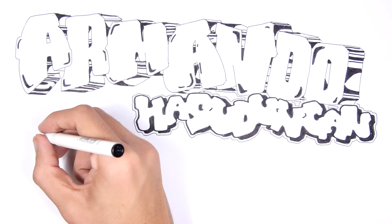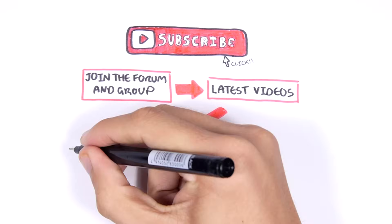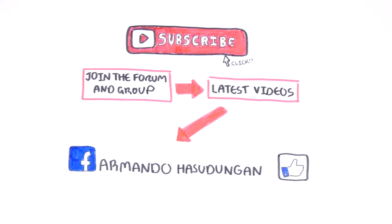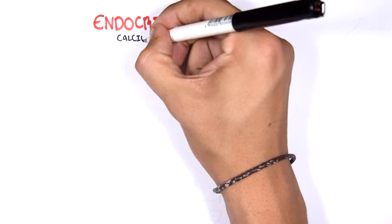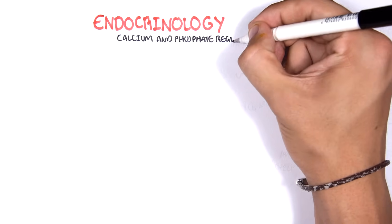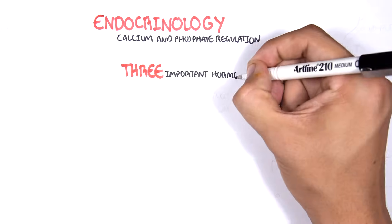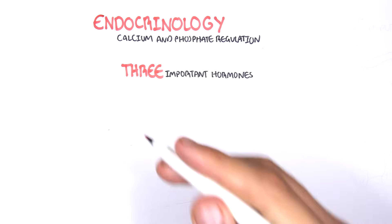Armando Hasurungan biology and medicine videos. In this video we're going to look at endocrinology, calcium and phosphate regulation — the hormones essentially involved in regulating calcium and phosphate levels in the blood. There are three important hormones involved: vitamin D, parathyroid hormone, and calcitonin.